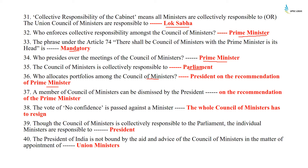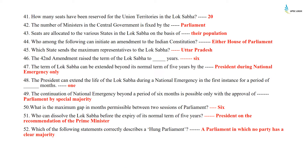A member of the Council of Ministers can be dismissed by the President on the recommendation of the Prime Minister. If a vote of no confidence is passed against a minister, the whole Council of Ministers has to resign. Though the Council of Ministers is collectively responsible to the Parliament, the individual ministers are responsible to the President. The President of India is not bound by the aid and advice of the Council of Ministers in the matter of appointment of union ministers. How many seats have been reserved for the union territories in the Lok Sabha? 20. The number of ministers in the central government is fixed by the Parliament. Seats are allocated to various states in the Lok Sabha on the basis of their population.